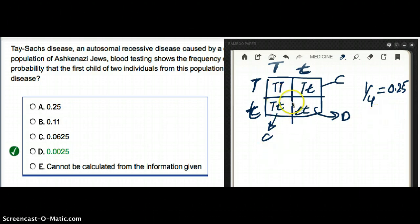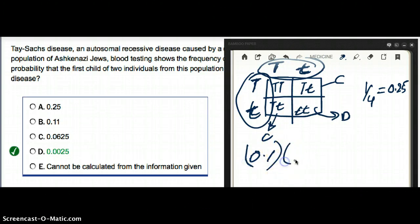Now, we have two heterozygotes from this population. The chance of a person from this population being a heterozygote is 0.1 - that's one parent. The chance of the other parent being a heterozygote is also 0.1.